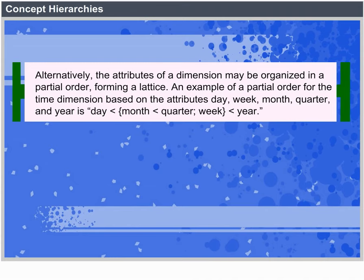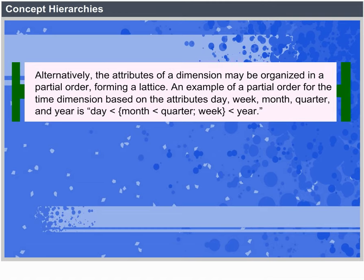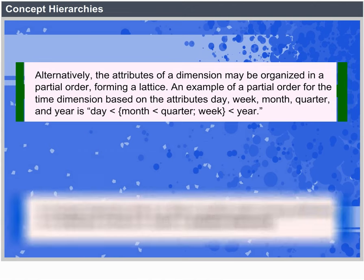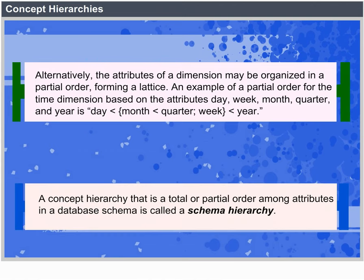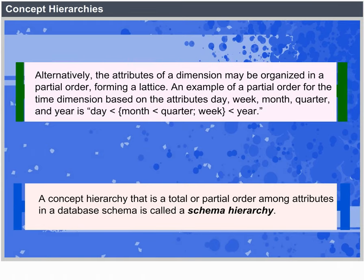An example of a partial order for the time dimension based on the attributes day, week, month, quarter and year is: day is part of a month, part of a quarter, part of a week, part of a year. Likewise, week is a part of the year. A concept hierarchy that is the total or partial order among attributes in a database schema is called a schema hierarchy.